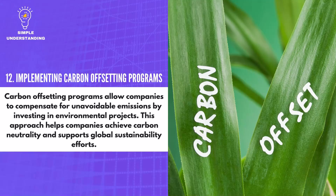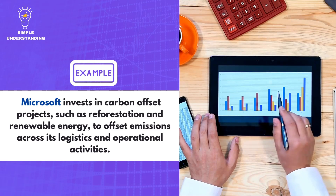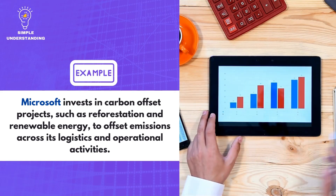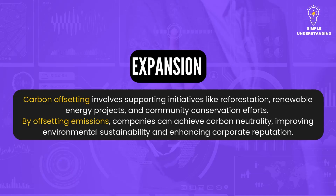12. Implementing Carbon Offsetting Programs. Carbon offsetting programs allow companies to compensate for unavoidable emissions by investing in environmental projects. This approach helps companies achieve carbon neutrality and supports global sustainability efforts. Microsoft invests in carbon offset projects, such as reforestation and renewable energy, to offset emissions across its logistics and operational activities. Carbon offsetting involves supporting initiatives like reforestation, renewable energy projects, and community conservation, allowing companies to achieve carbon neutrality and enhancing corporate reputation.